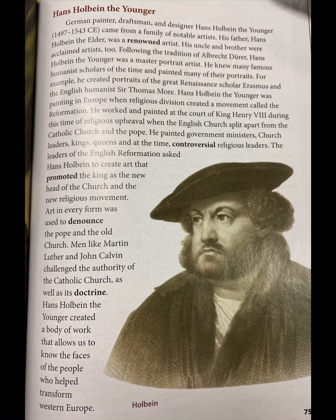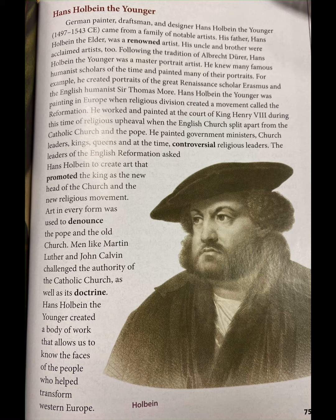Hans Holbein the Younger was painting in Europe when religious division created a movement called the Reformation. He worked and painted at the court of King Henry VIII during this time of religious upheaval, when the English church split apart from the Catholic church and the pope. He painted government ministers, church leaders, kings, queens, and controversial religious leaders. The leaders of the English Reformation asked Hans Holbein to create art that promoted the king as the new head of the church. Art in every form was used to denounce the pope and the old church. Men like Martin Luther and John Calvin challenged the authority of the Catholic church as well as its doctrine. Hans Holbein the Younger created a body of work that allows us to know the faces of the people who helped transform Western Europe.